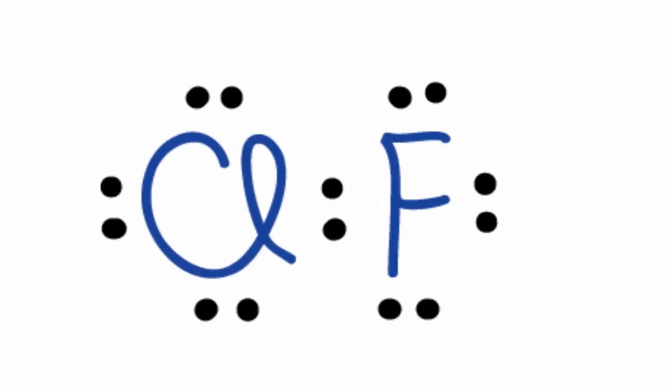So we've used all 14 valence electrons, we've completed the octets on the chlorine and the fluorine, and that's the Lewis structure for ClF, chlorine monofluoride. This is Dr. B, and thanks for watching.